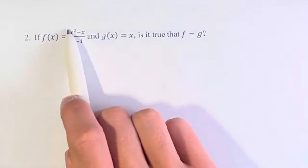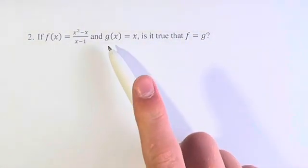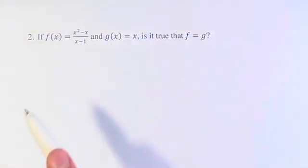We can simplify f(x) and it's going to look a lot like g(x). What does it actually mean for f to be equal to g? Well, for any x input they need to have the same output.